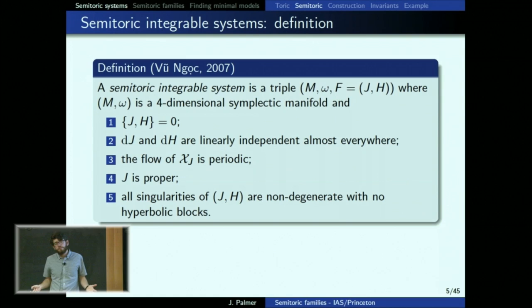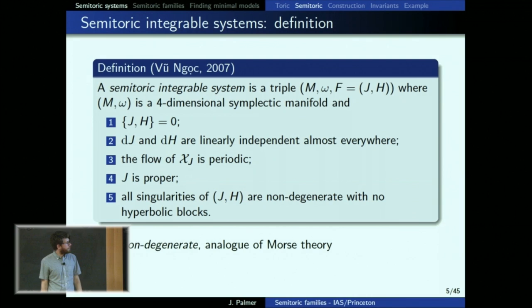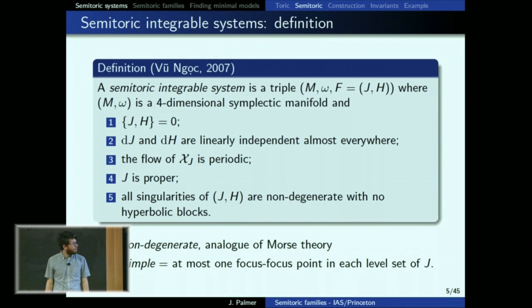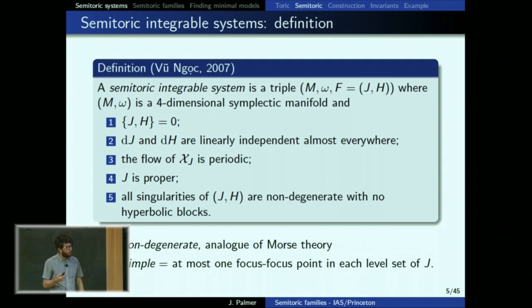There's a classification of non-degenerate singularities, which is exactly the analog of Morse theory, and the non-degenerate ones can be classified into different types. One type we do not allow is hyperbolic. A system is called simple if it has at most one focus-focus point for each level set. Focus-focus points are part of this classification — we'll have lots of pictures of pinch tori in a minute.